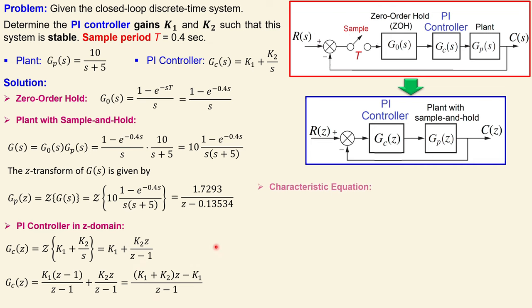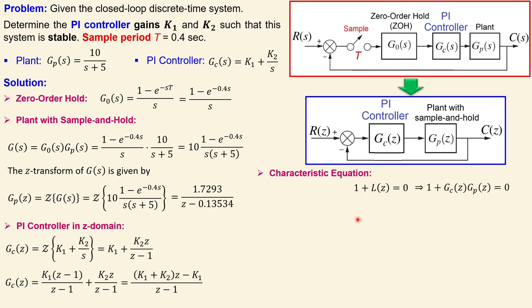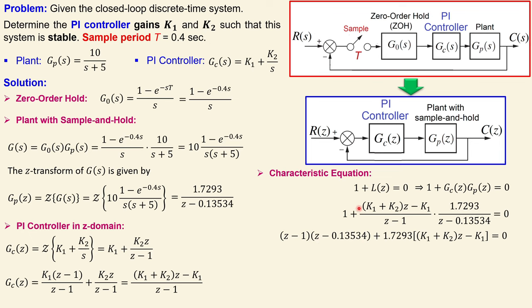The characteristic equation from root locus design is always 1 plus the loop transfer function equals zero. The loop transfer function in the z-domain is just the controller times the plant, with unity gain feedback. Since we have a single fraction, we can multiply: the plant is 1.7293 over (z minus 0.13534), times the PI controller expression. Multiplying both sides by (z-1)*(z-0.13534) gives the numerator expression: 1.7293 times the PI controller numerator.